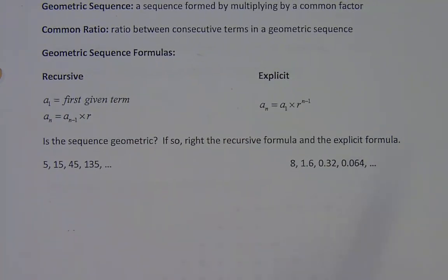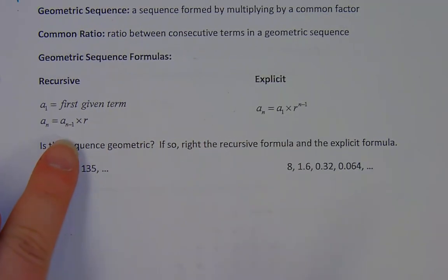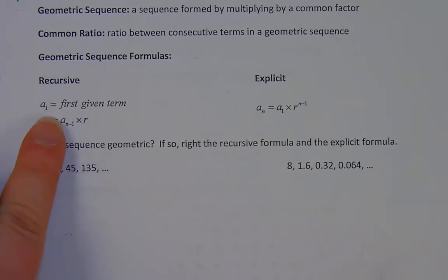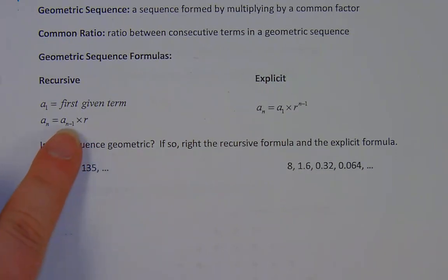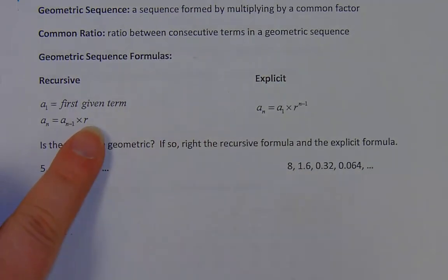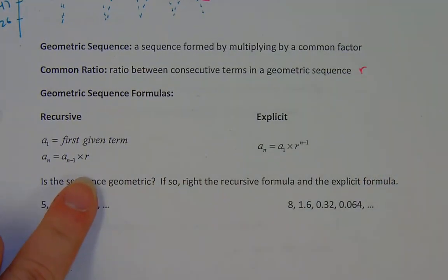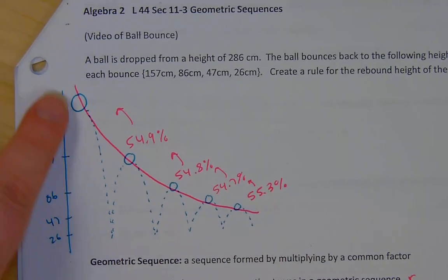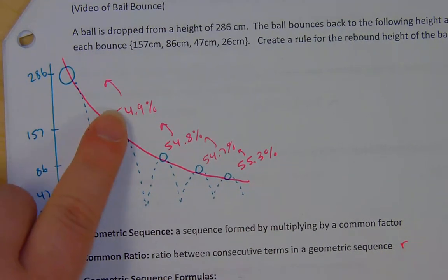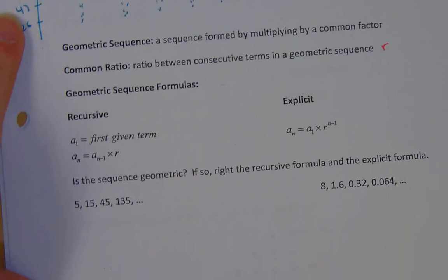We can write recursive and explicit formulas for geometric sequences. Same as in arithmetic, when we write a recursive formula, we want to specify what that first term is. Because any term a-sub-n will be that previous term — whatever a-sub-(n-1) is — times that common ratio. We use lowercase r to represent that common ratio. So for example, if our previous term is 157, we multiply by the common ratio to get our next term, 86.